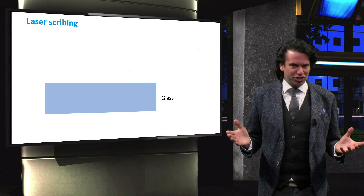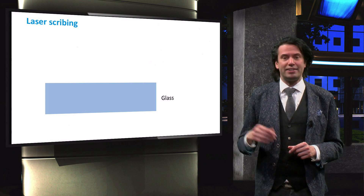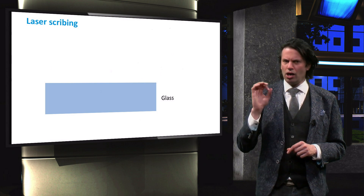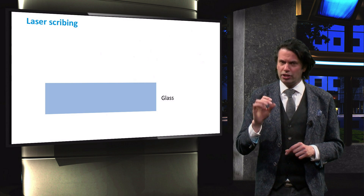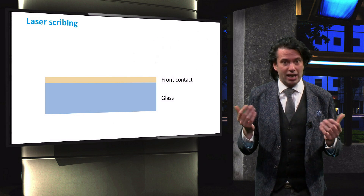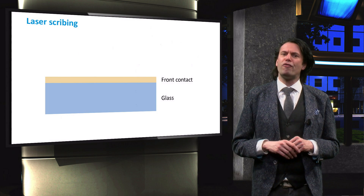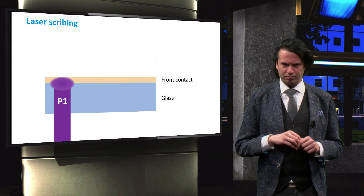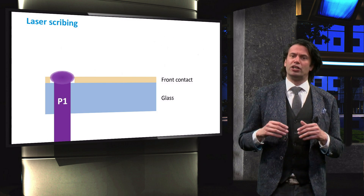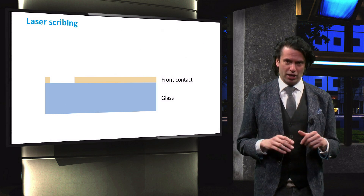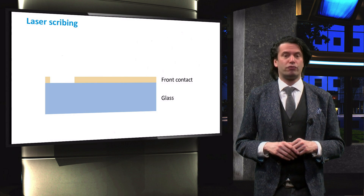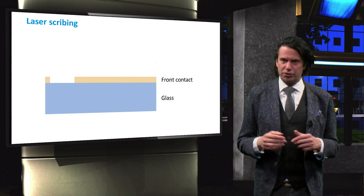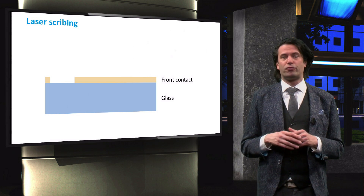To illustrate these laser scribing steps, we will look at a thin film cell deposited in superstrate configuration. On top of a glass substrate, the transparent front electrode is deposited. Then the first laser scribing step, called P1, is performed. The wavelength of the laser is such that it is transmitted through the glass and absorbed by the front contact. The P1 laser scribing step evaporates the material and leaves a gap in the front contact.